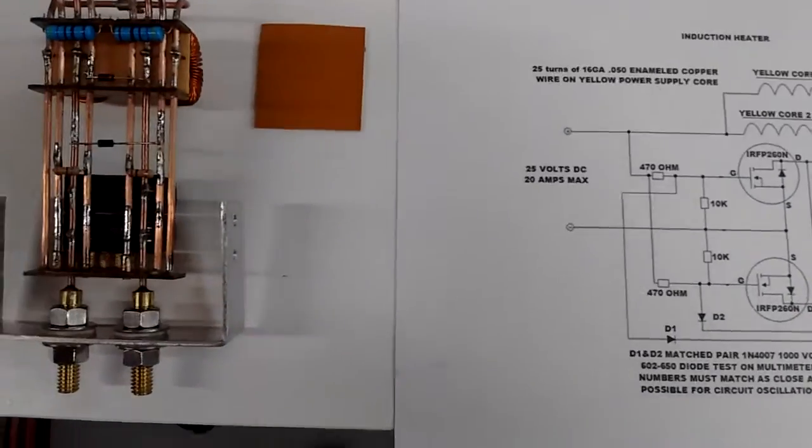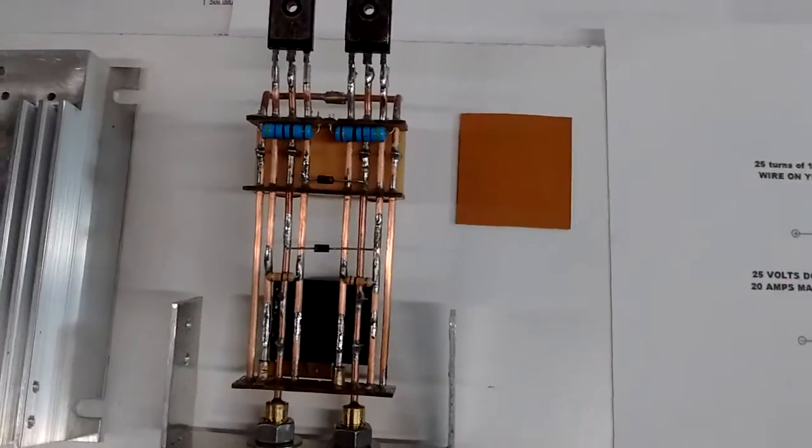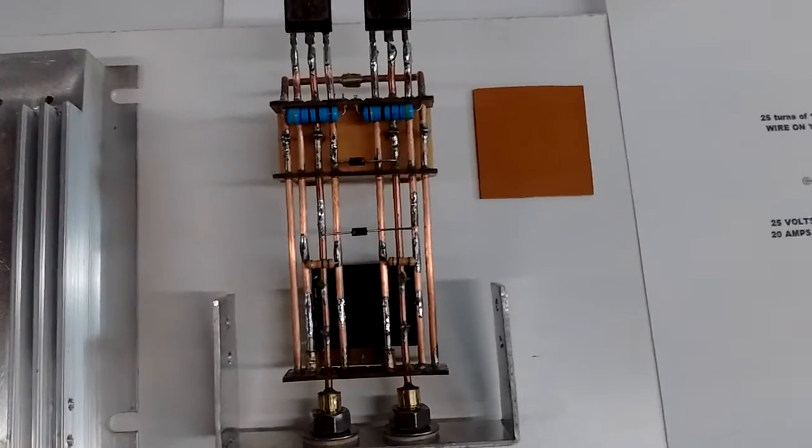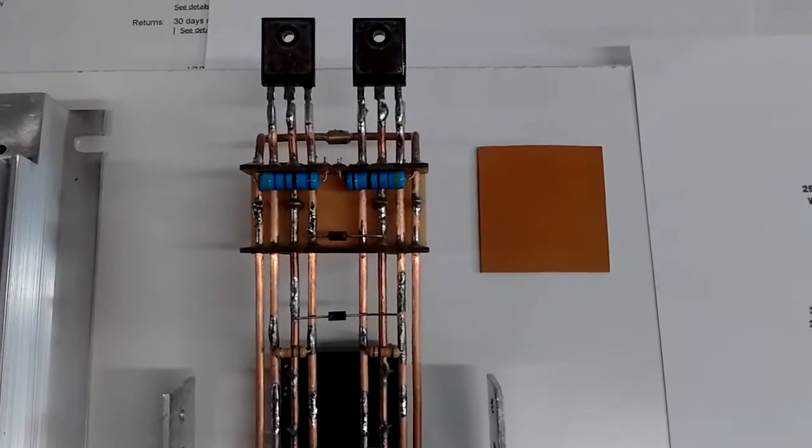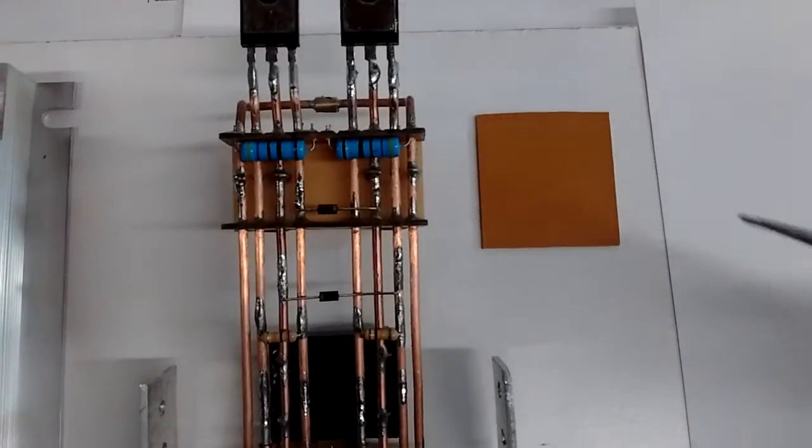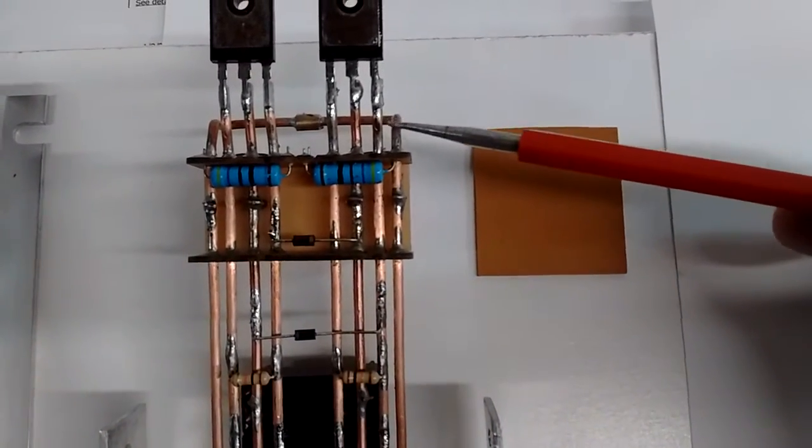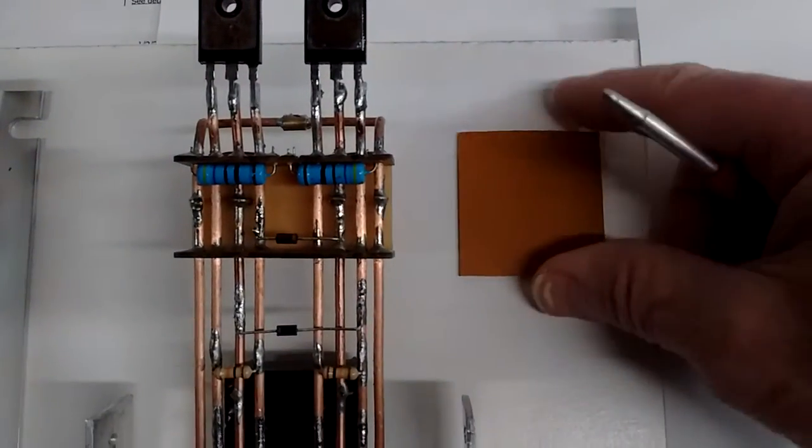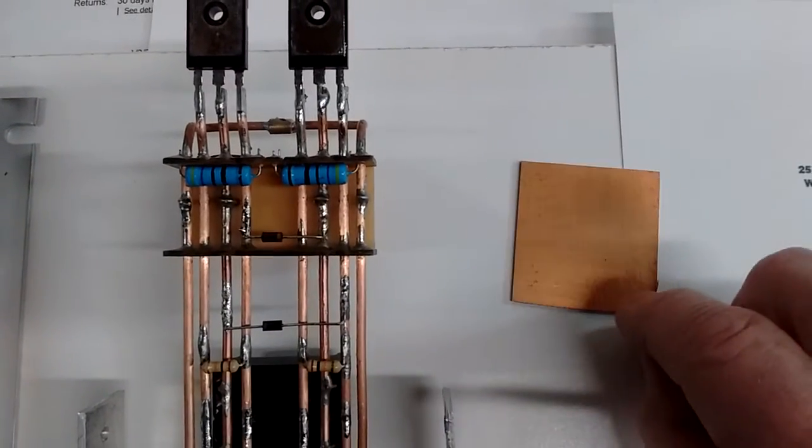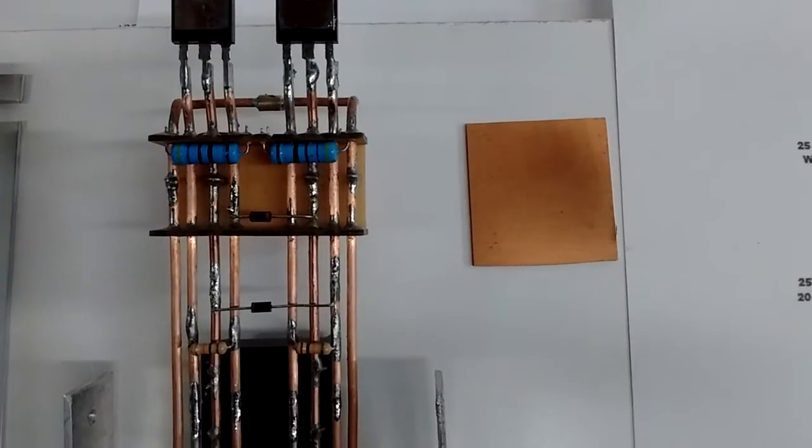This is parts from the Chinese induction heater, built on these copper rails. These pieces right here are pieces of circuit board. This is just copper circuit board, and you remove the copper from it with some etching solution to make these little pieces.